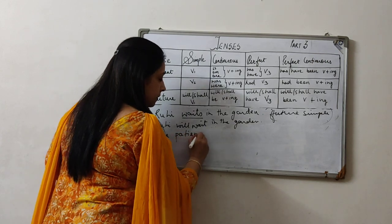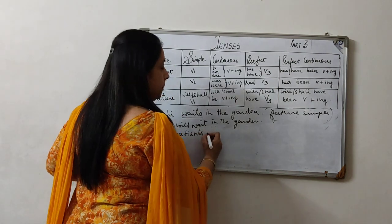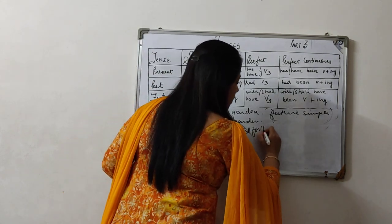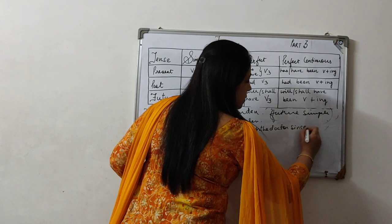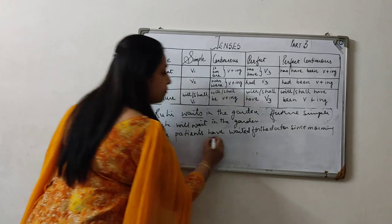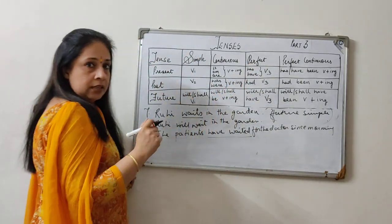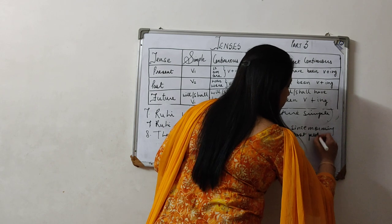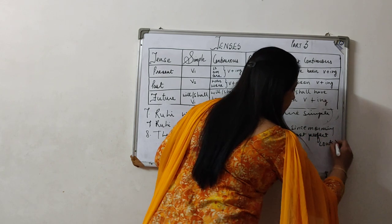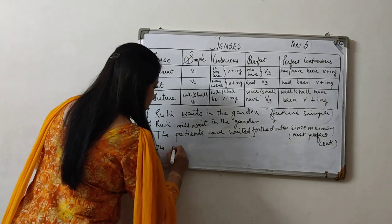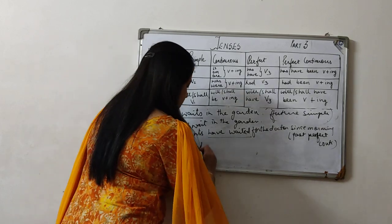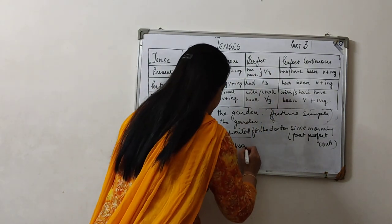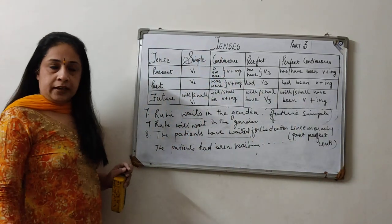If the sentence is: 'The patients have waited for the doctor since morning.' 'Have waited' is present perfect tense. If we have to make it past perfect continuous, we do the conversion. The patients — past is 'had been' with verb ing — so it becomes: 'The patients had been waiting for the doctor since morning.'